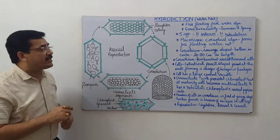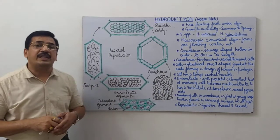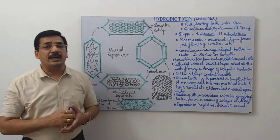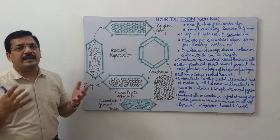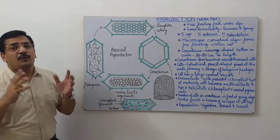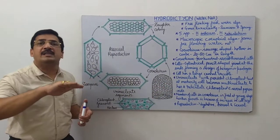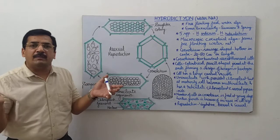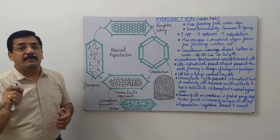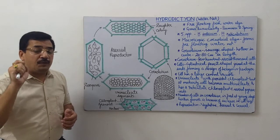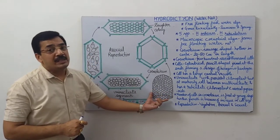As far as reproduction is concerned, Hydrodictyon reproduces by three methods: one is vegetative, second is asexual, and third is sexual method. Vegetative method is very simple and takes place by fragmentation. If the colony or coenobium is broken in small fragments due to any accident, the broken part is called a fragment and each fragment is capable to form a new colony or a new coenobium.